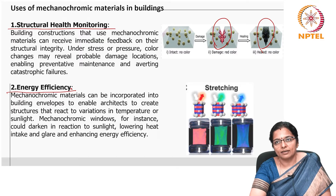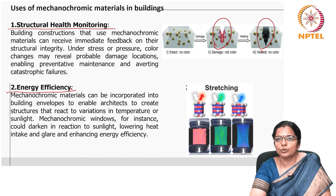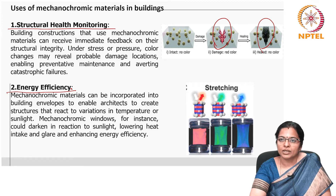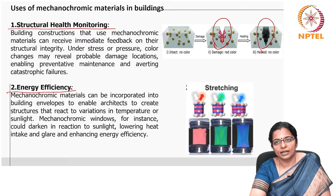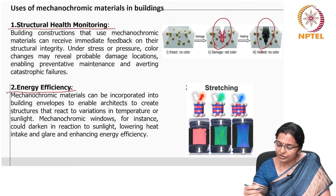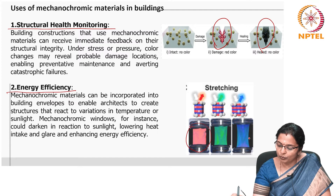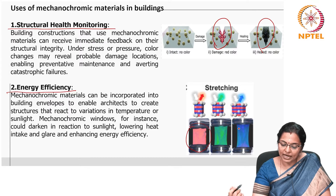The second use in buildings is energy efficiency. Mechanochromic materials can be incorporated into building envelopes to enable architects to create structures that react to variations in temperature or sunlight. As can be seen, stretching can change the color from red to green to blue depending upon the extent to which the material expands.